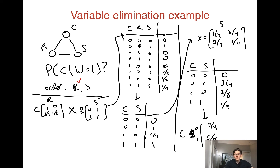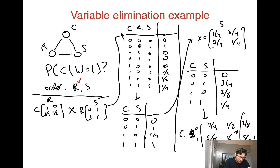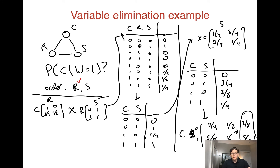We're almost done. We only have factors over C, but don't forget we also have the original factor just involving C, which is one-half either way. Multiplying that in gives us 3/8 and 5/16 — or after multiplying by 1/2: three-eighths and five-sixteenths. We normalize, and it happens to already be normalized. We see it's slightly more likely to be cloudy than not cloudy given the grass is wet — which is intuitive, because being cloudy increases the chance of rain. That was our variable elimination example.